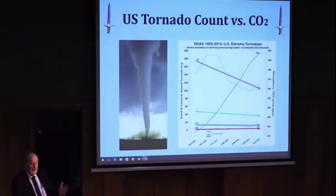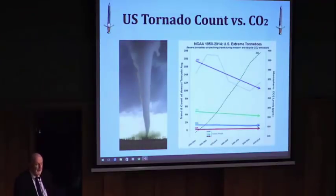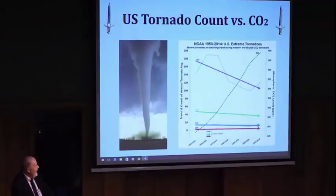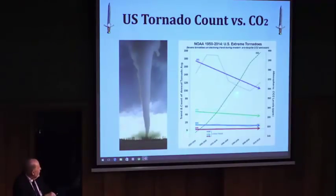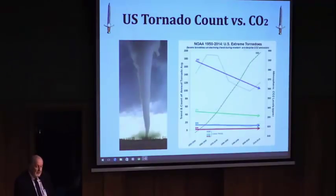Here's tornadoes. Tornadoes scare everybody — you see all these pictures of damaged buildings. This is Cat 5, Cat 4, Cat 3, Cat 2. Every category of tornadoes over the period that CO2 is rising is either flat or falling. So severity of tornadoes is going down too.